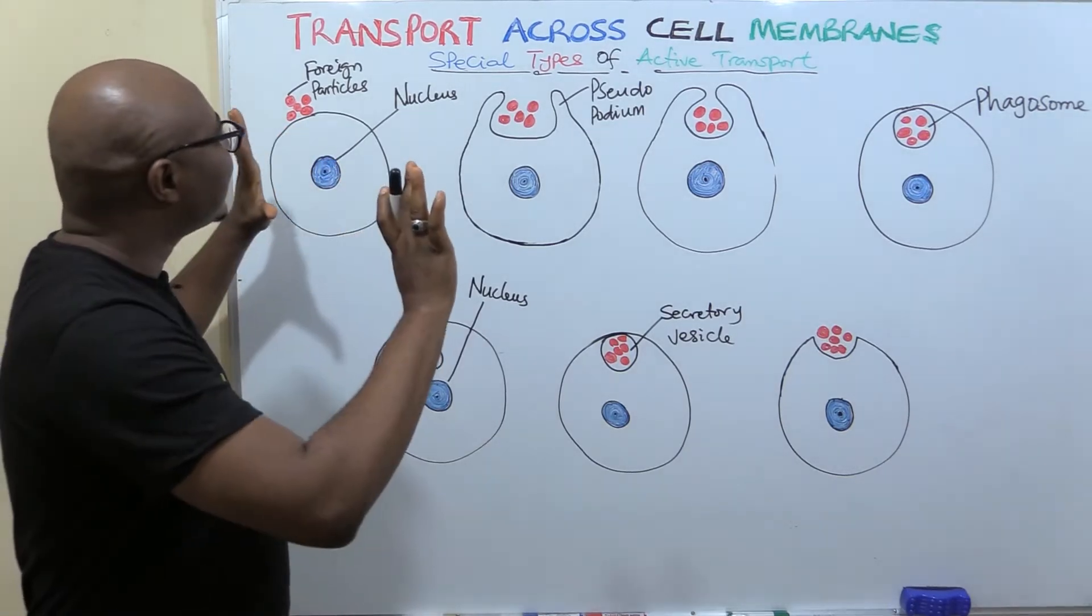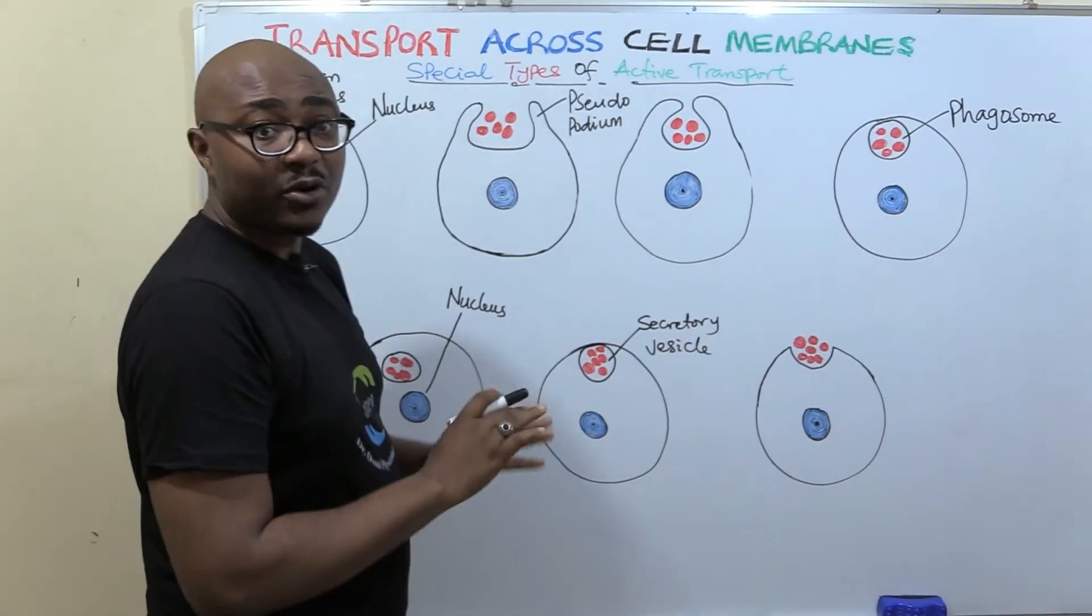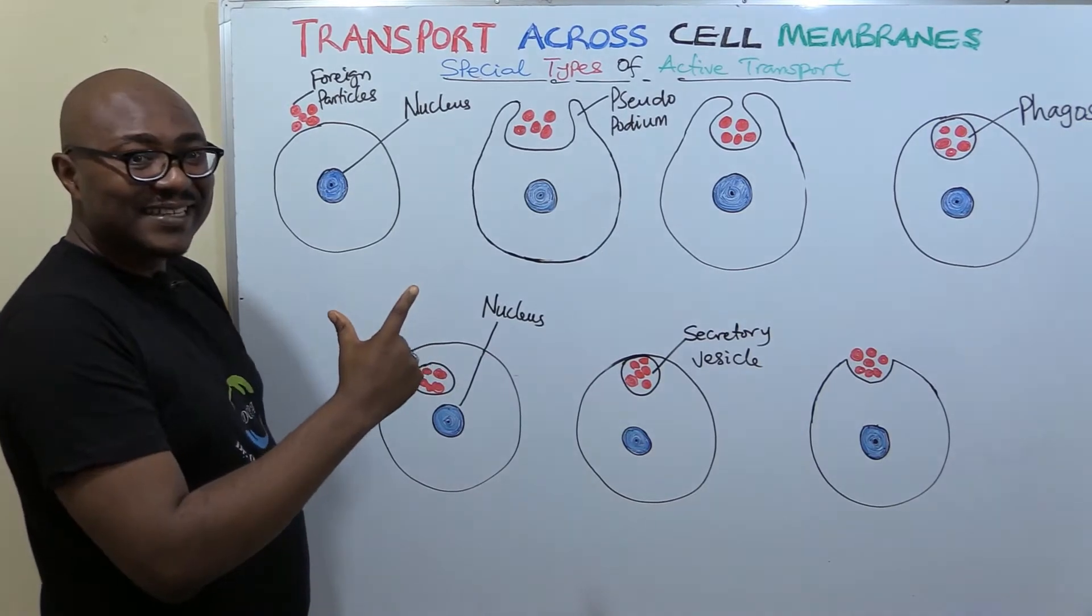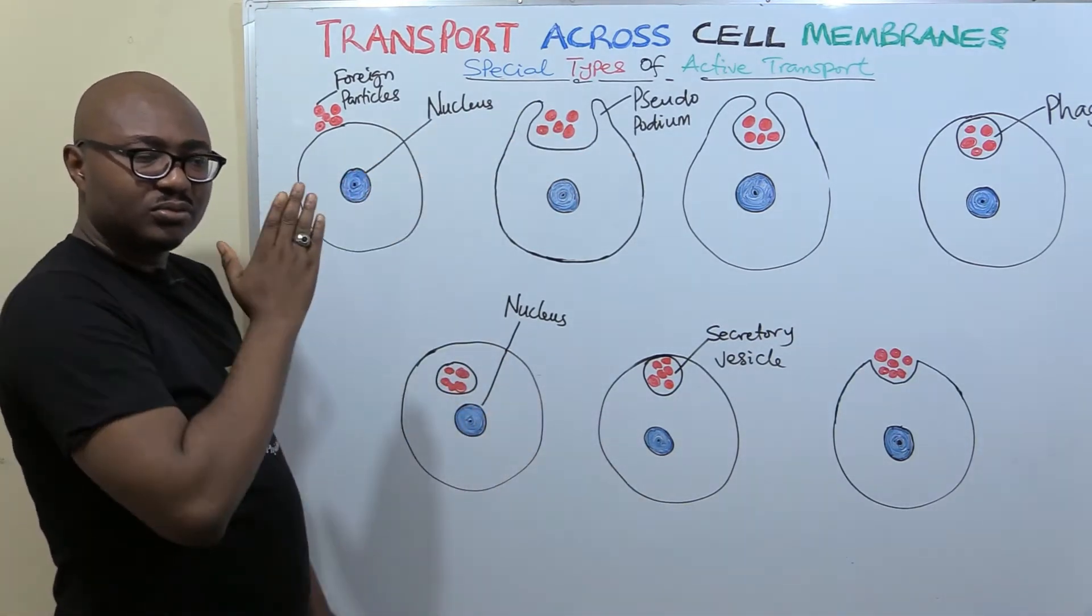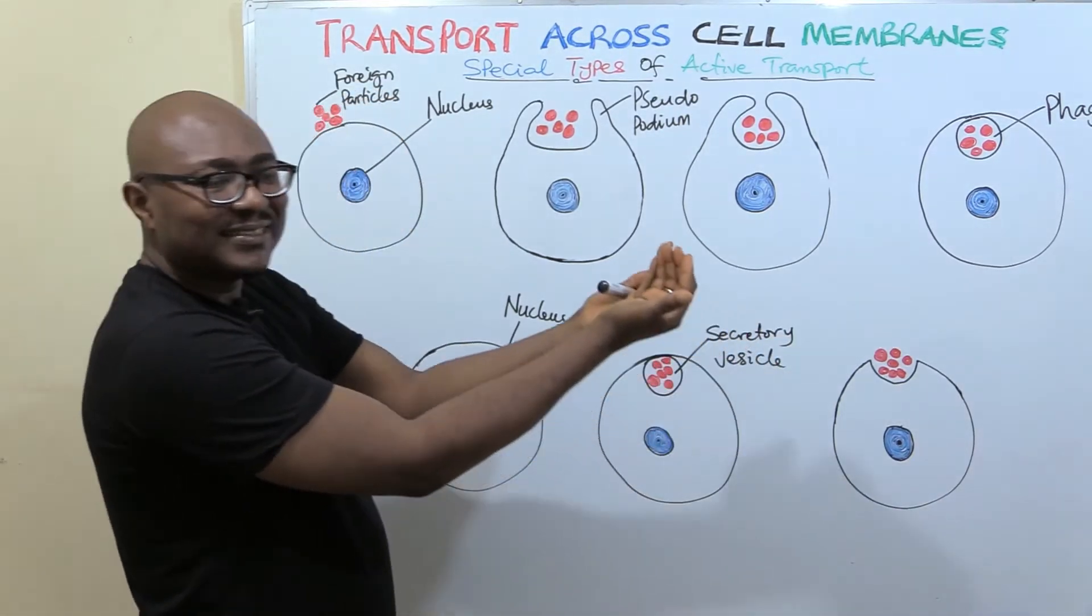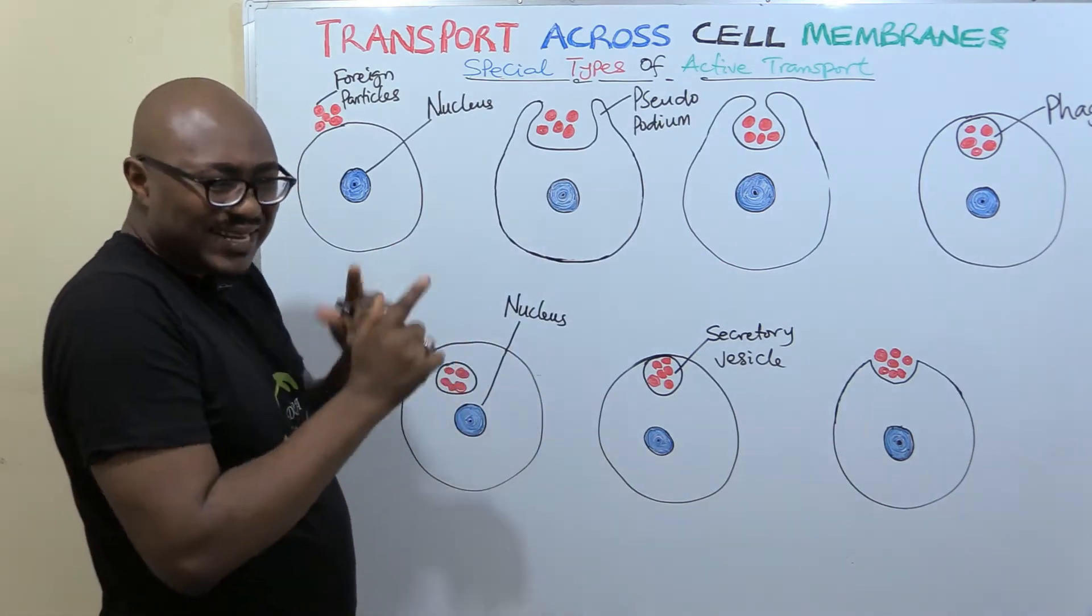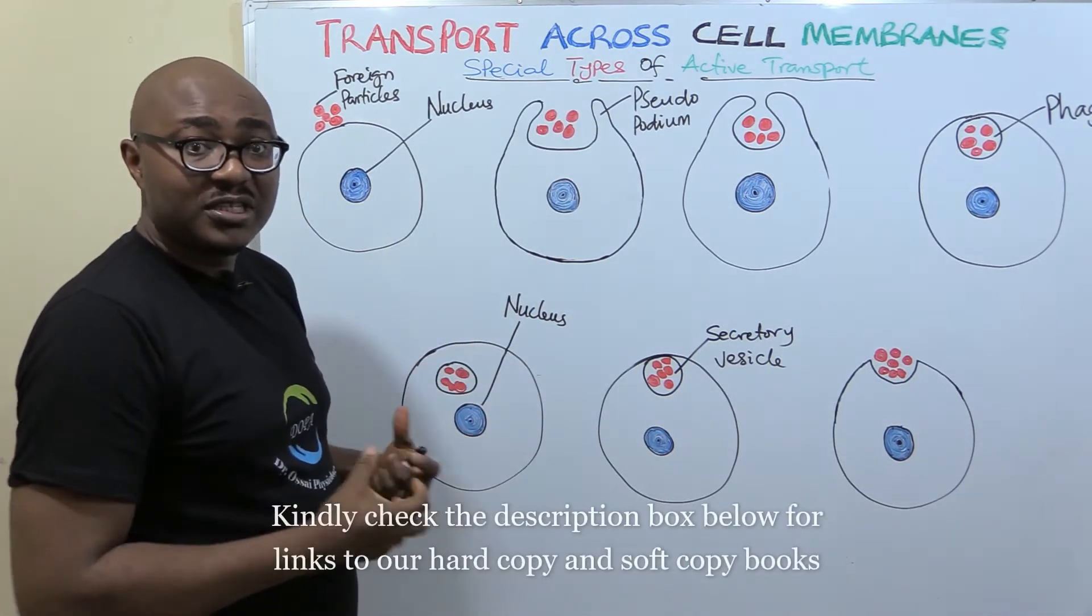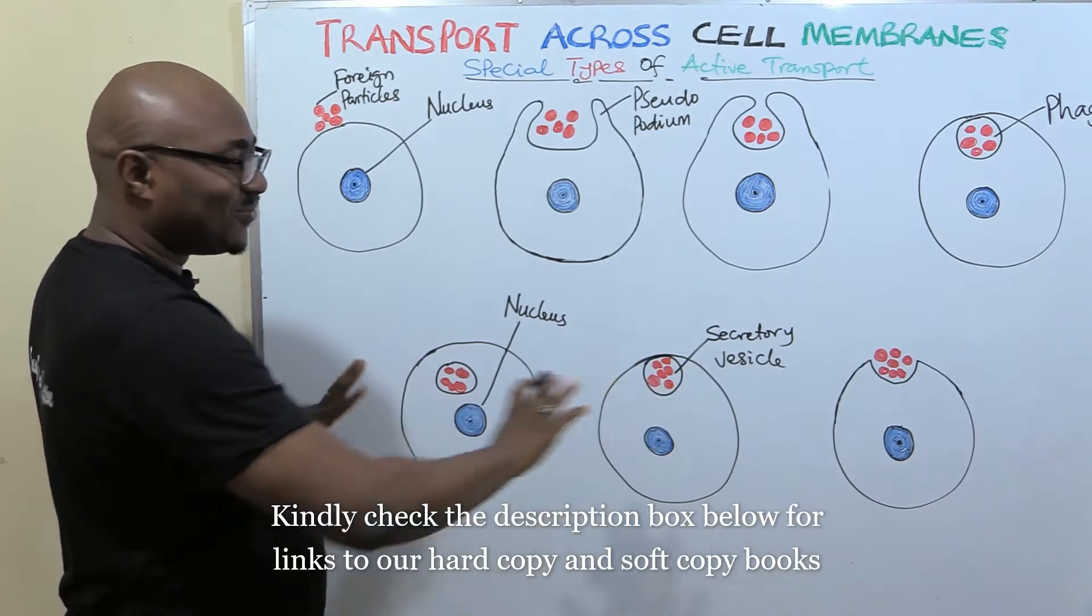Now let's get started. So today we're going to be dealing with special types of active transport, part of the general topic transport across cell membranes. Why are we calling them special types? They are special because they are not really being transported through the cell membrane, but they find their way either from outside the cell into the cell or from inside the cell out, without necessarily passing through the cell membrane. And of course, it's active transport because it uses a lot of energy.